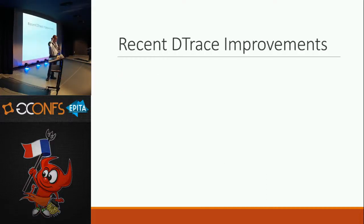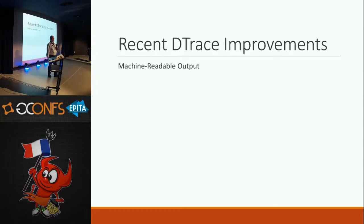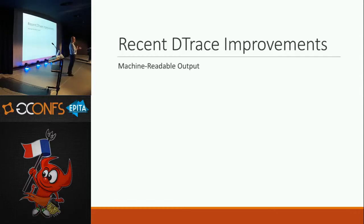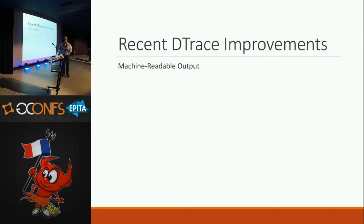Let's talk about some improvements we've made to DTrace — we being the CADETS project. The first one was machine-readable output. DTrace was built by people who loved awk. The output that comes out of DTrace is not easily parseable by a program — it's meant to be parsed by a human who's looking at the console, or maybe they've built a flame graph. It's not really meant to be ingested into another program. So one of the first things we added was libxo support — now you can have your output in XML. You're welcome. Also JSON.